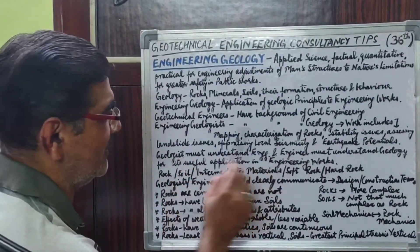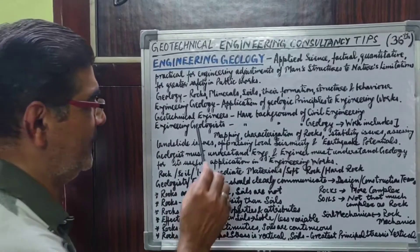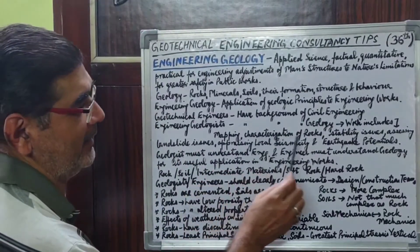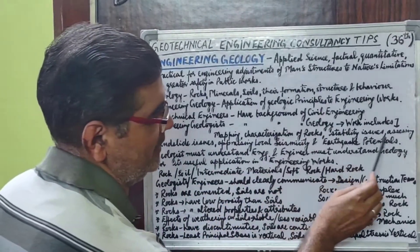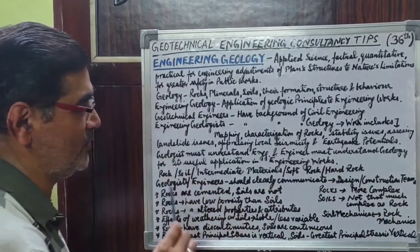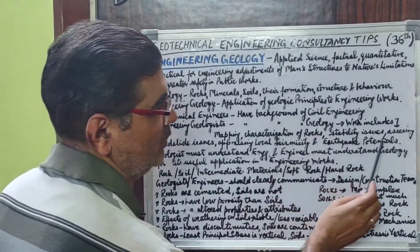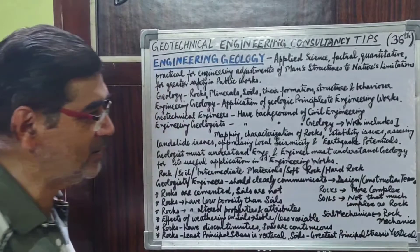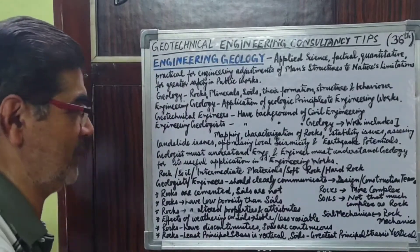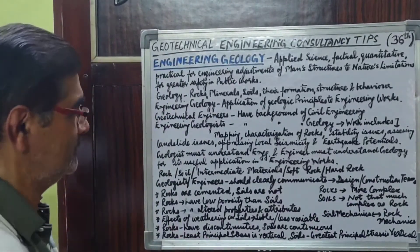What does the work of engineering geologists include? It includes mapping and characterization of rocks, stability issues, assessing landslide issues, and appraising local seismicity and earthquake potentials for any upcoming new development, wherever it may be in a rocky terrain.